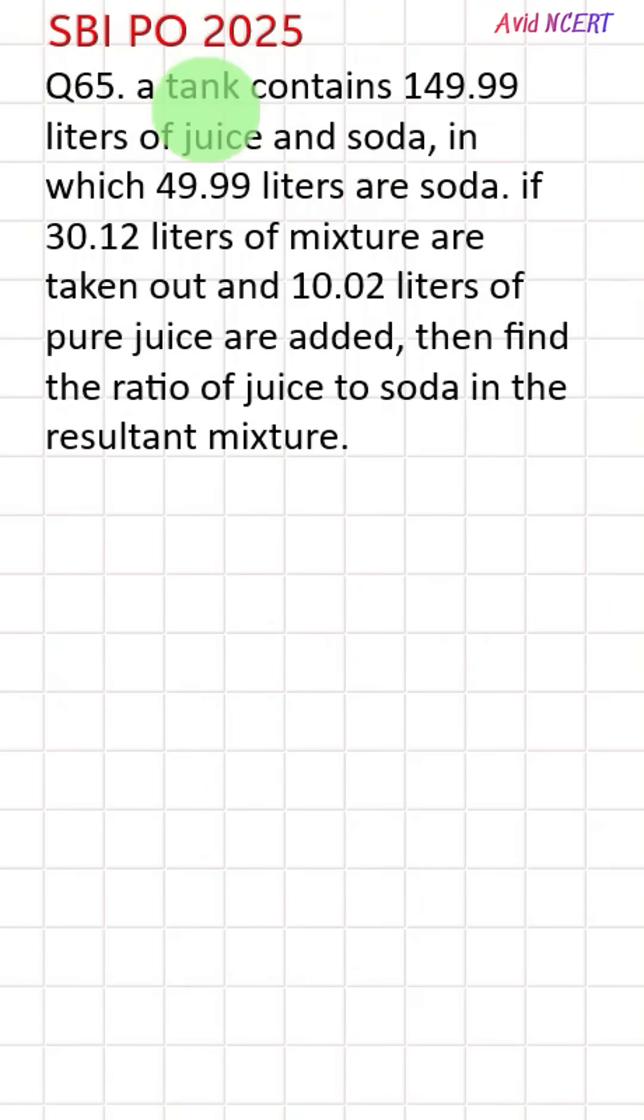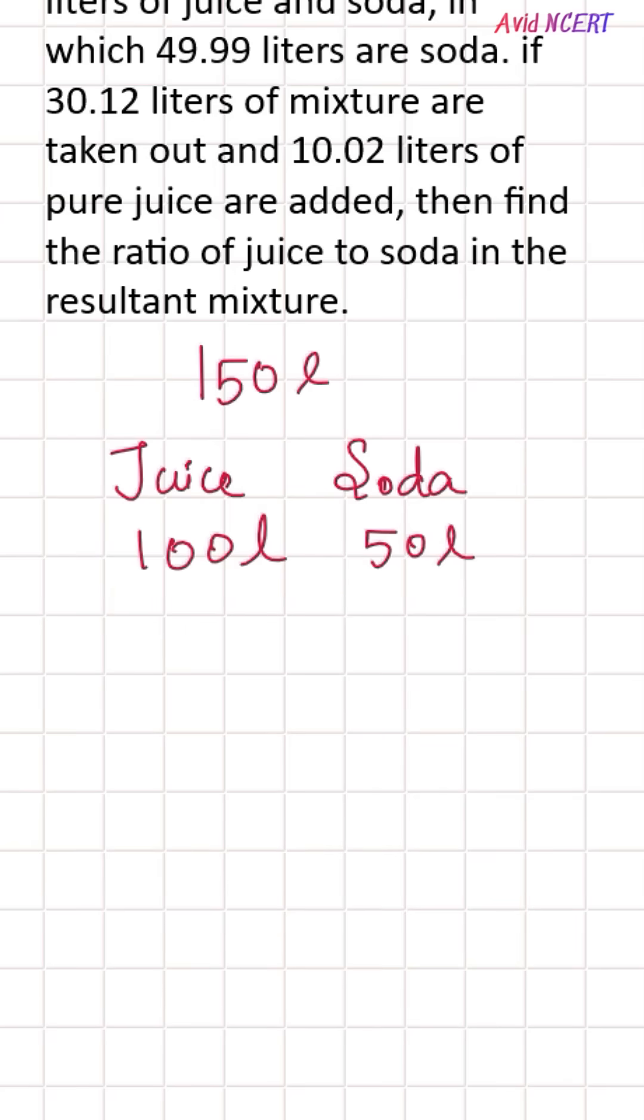Question number 65 from the 2025 question paper. A tank contains 149.99 liters of juice and soda, which can be rounded off to 150. In this, 49.99 liters are soda, which can be rounded as 50 liters of soda. So the remaining 100 liters would be juice.